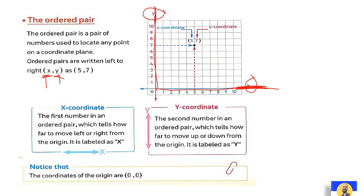So how do we create an ordered pair? For example, the pair (5, 7) means we move on the x-axis five steps — one, two, three, four, five — and after reaching number five, we go up: one, two, three, four, five, six, seven. Five means five steps on the x-axis and seven means seven steps up on the y-axis.